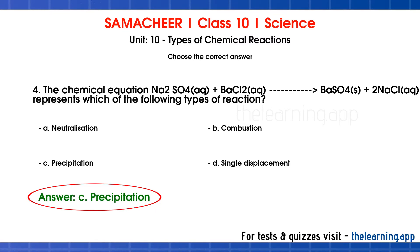Precipitation is a double displacement reaction. In double displacement, two compounds react, and the ions are exchanged between them. In this reaction, SO4 from Na2SO4 joins with Ba to form BaSO4, while Na combines with Cl to form 2NaCl. This ion exchange is double displacement, also called double decomposition.